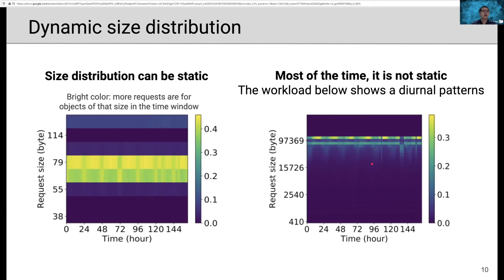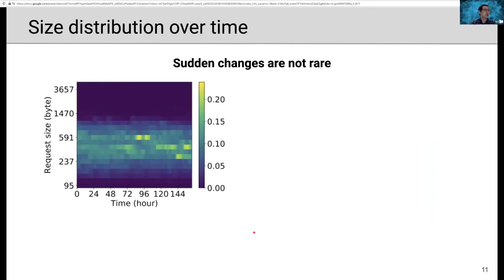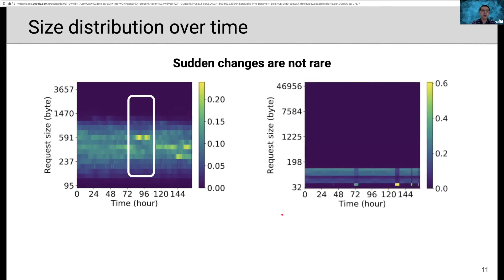For example, in this figure, we show that the workload shows a diagonal pattern. There are more requests for objects belonging to this size category during either day or night. So this is a regular change. We also see irregular change. For example, in this cache, we observe that most of the time requests for objects belonging to this size category is around 10%, but suddenly at this few hours, it increased to more than 20%. In the right figure, it's more severe. Requests for objects belonging to this size category is mostly around 2%, but suddenly here and here, it burst to 60%. So that's a huge change.